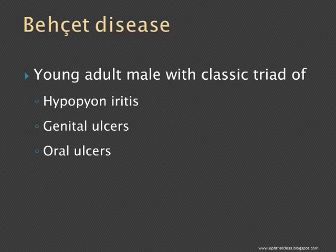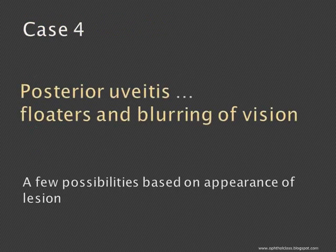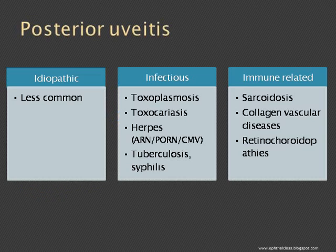For posterior uveitis, a patient who presents with floaters and blurring of vision — a characteristic pattern of the disease sometimes helps us make the diagnosis. The differential diagnosis includes idiopathic, infectious, and immune-related causes. The immune-related variety has specific groups: collagen vascular diseases and retinochoroidopathy, which includes White dot syndromes and serpiginous choroidopathy.